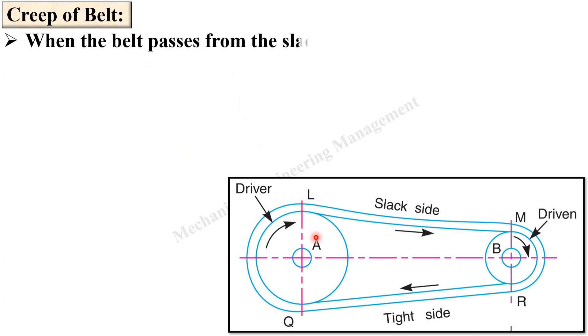When the belt passes from the slack side to the tight side, it is talking about from here to here. This is the slack side and this one is the tight side.